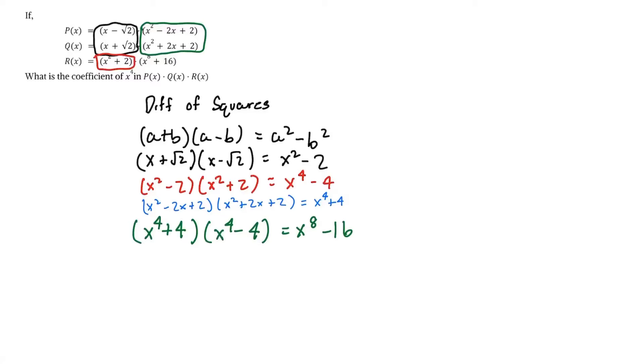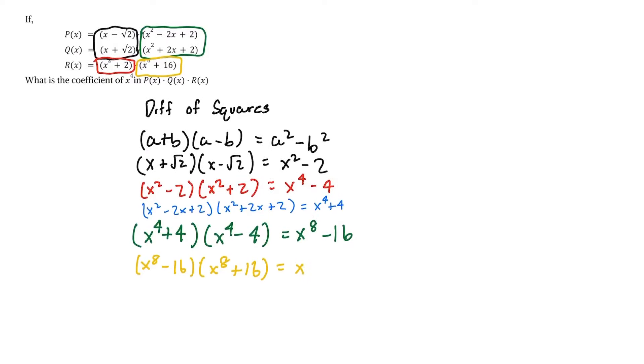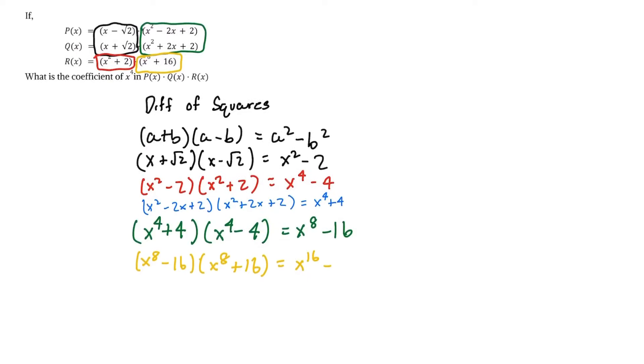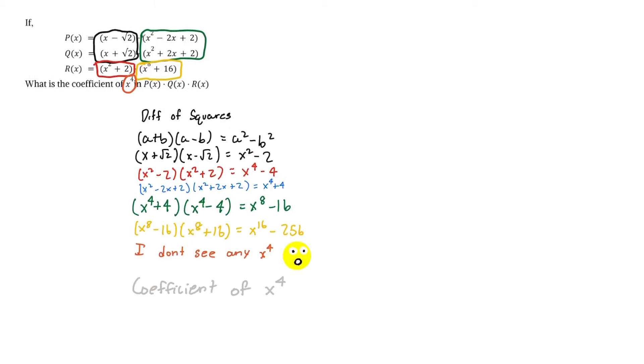And then the last expression we see fits great with x⁸ - 16. So we multiply those together to get x¹⁶ - 256. Like the last solution, I don't see any x⁴. So the coefficient of x⁴ is one ginormous goose egg. Or zero.